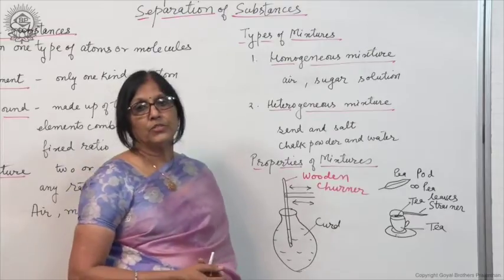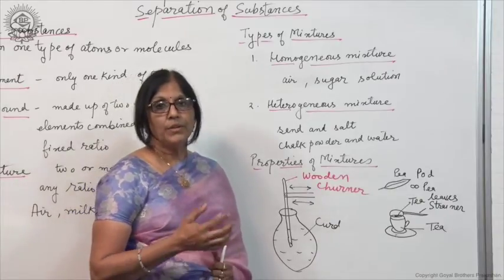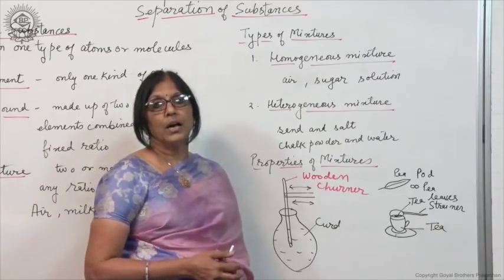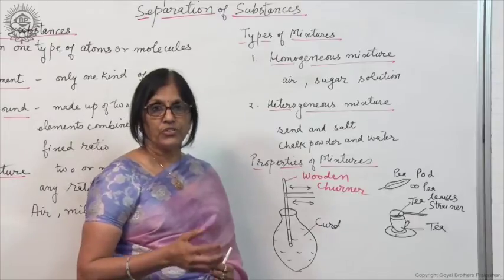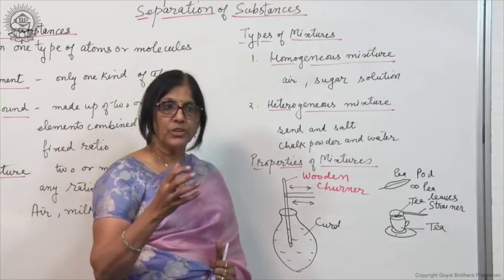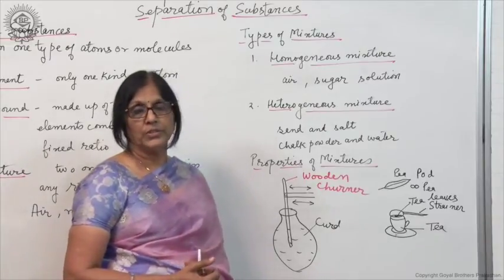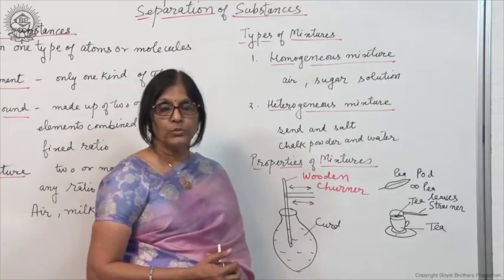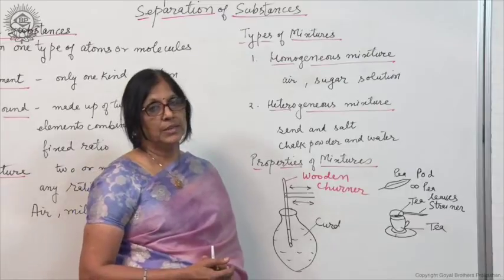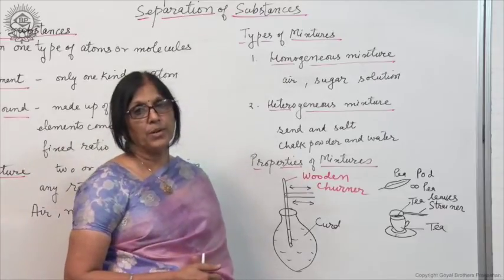What are the various properties of a mixture, totally different than that of a compound? In a mixture, the constituents are mixed in any ratio—the ratio is not fixed. The properties of the constituents of a mixture remain the same. The constituents retain their properties; the properties do not change. Also, the constituents of a mixture can easily be separated by simple physical methods. These are the three main properties, totally different than the properties of a compound.